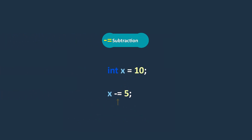The subtraction assignment operator subtracts the value on the right-hand side from the variable on the left-hand side and assigns the result to the variable. For example, the expression x -= 5 is a shorthand notation of x = x - 5. So in this case, the value of x would be 5.